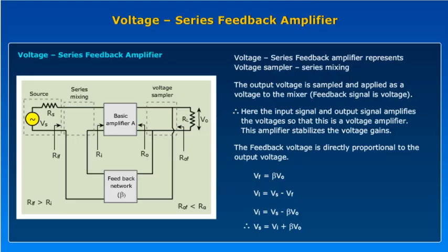We already know that there are four types of negative feedback amplifiers: voltage series feedback amplifier, voltage shunt feedback amplifier, current series feedback amplifier, and current shunt feedback amplifier.